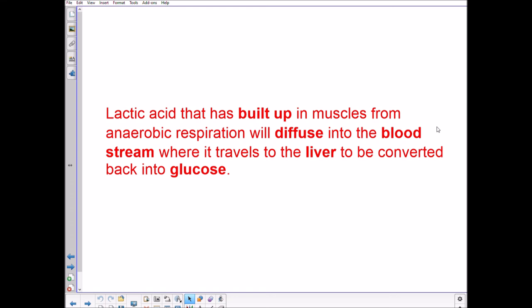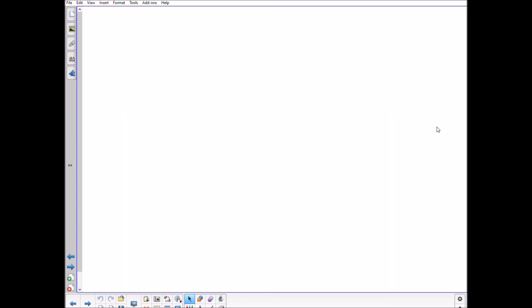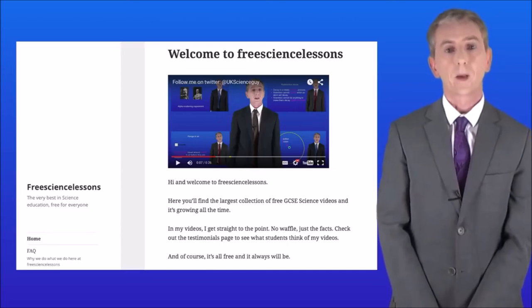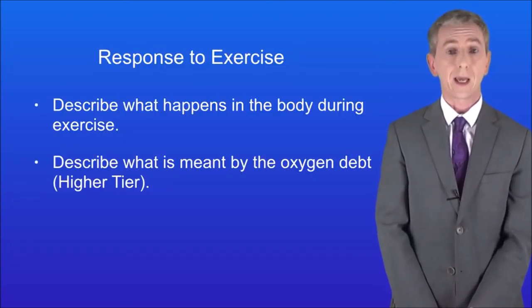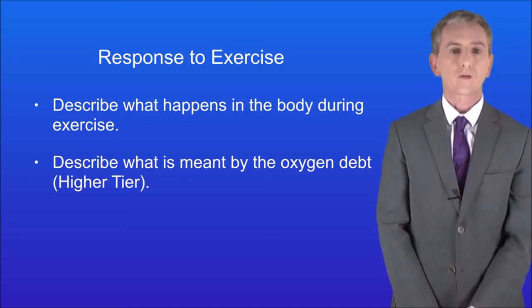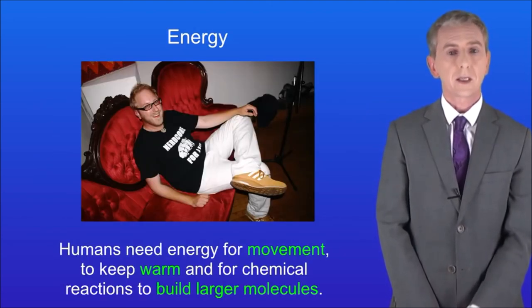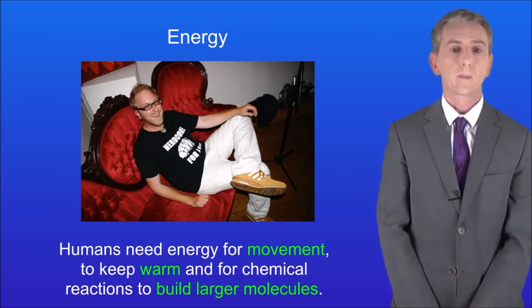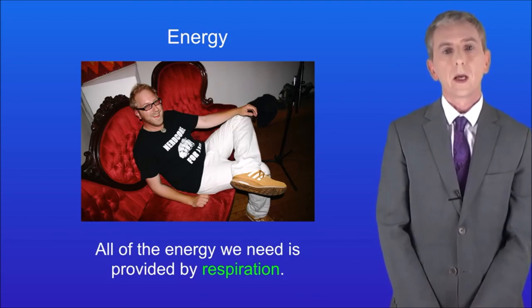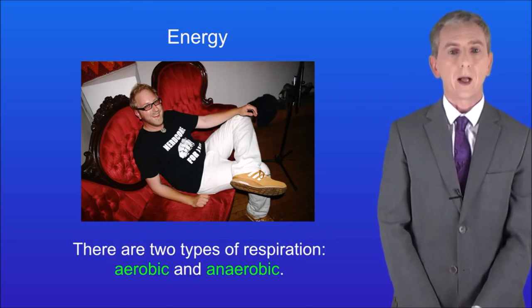Now we'll look at an external video from freesciencelessons.co.uk. By the end of that video you should be able to describe what happens in the body during exercise, and if you're a higher tier student, describe what's meant by the oxygen debt. Humans need energy for movement, to keep warm, and for chemical reactions to build larger molecules — all provided by respiration. There are two types: aerobic and anaerobic.